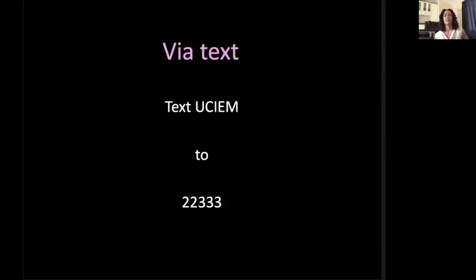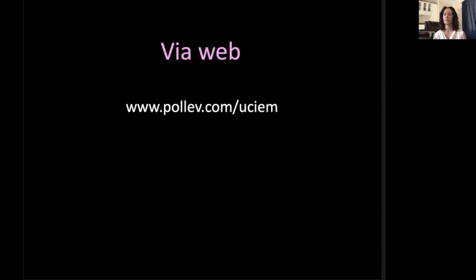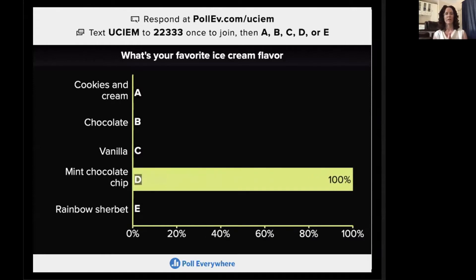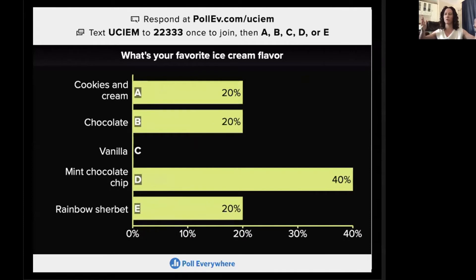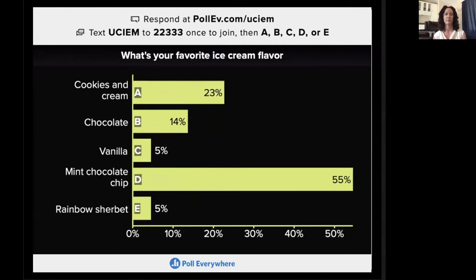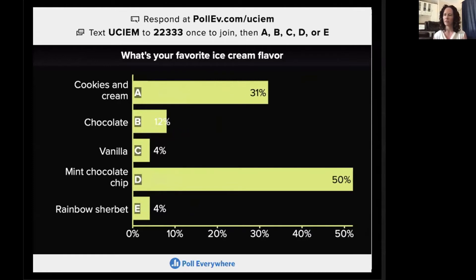I'd like you guys to join me on Poll Everywhere. If you want to do it via text, you can text UCIEM to 22333, or since most of you are on your computers, go to pollev.com. This is one of the easiest ways you can use Poll Everywhere — what's everyone's favorite ice cream flavor? You guys should all see the different options on your screen. Mint chocolate chip is winning by far, but we do have some rainbow sherbet. No one loves vanilla — this is an interesting group.